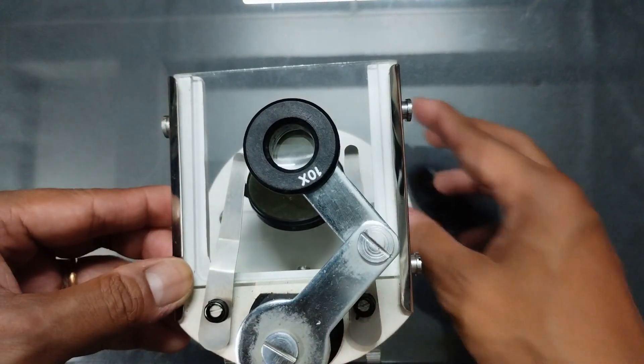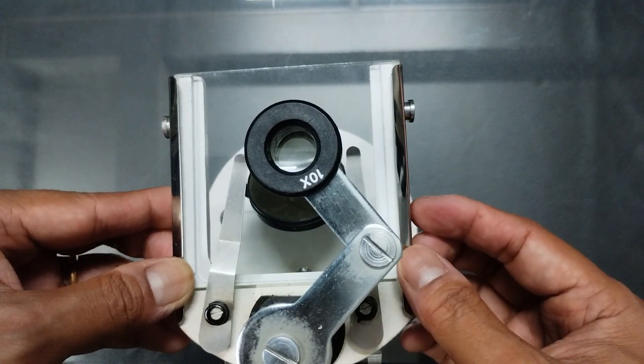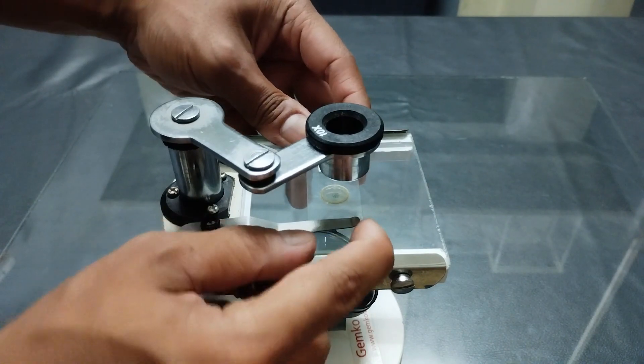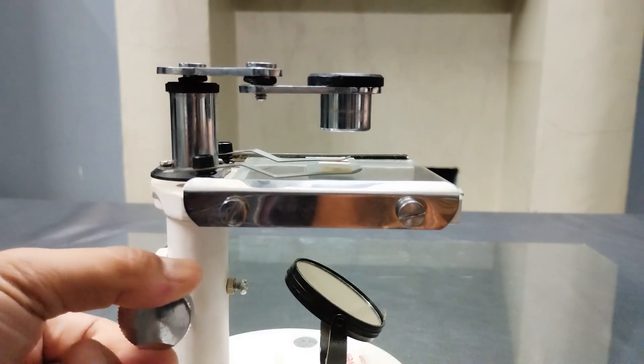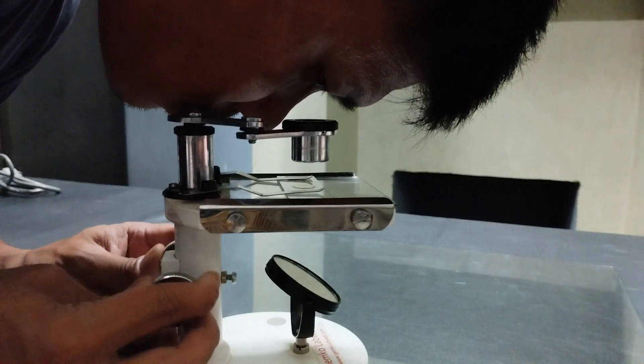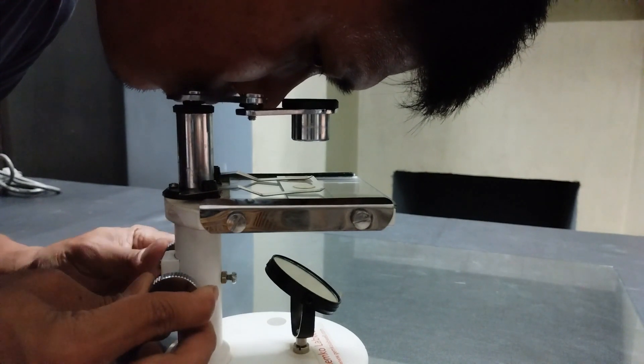Now, if the specimen is of a transparent nature and you want to use transmitted light to view it, simply place the specimen right beneath the eye lens. Using the adjustment screw, lower the lens to its maximum or until it almost touches the specimen surface. Then look through the lens and gradually lift it up using the screw until the specimen comes into clear focus. Observe and study.